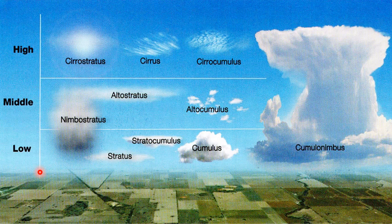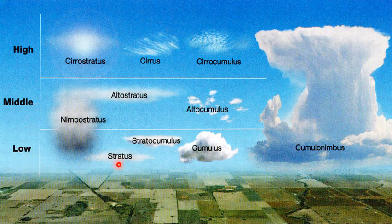Clouds are a type of condensation that occurs at higher altitude. Clouds can be classified into three different groups on the basis of height.